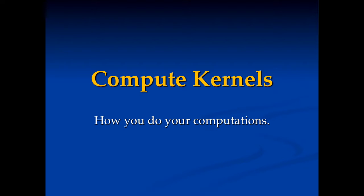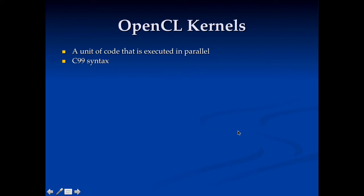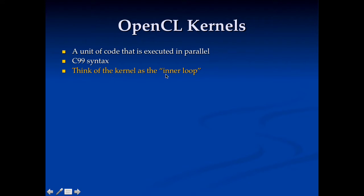Now we're going to talk about compute kernels. Compute kernels are how you specify the computations you're going to do in parallel in OpenCL. An OpenCL kernel is the code you execute in parallel, and it's basically just C99 — standard straight-up C code. You can think of this as really the inner loop, the code that you're going to execute thousands of times in parallel.